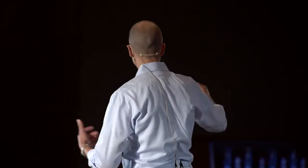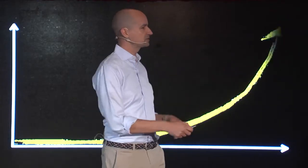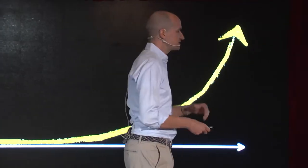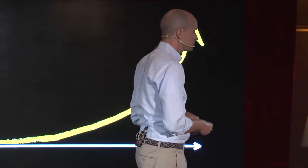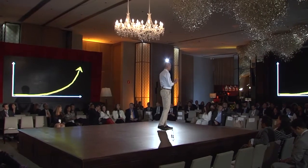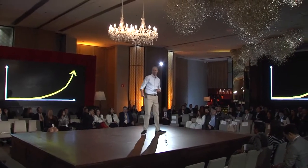At Singularity University we talk a lot about the future being exponential. An exponential trend is a doubling every time period — you go from 1 to 2, 4, 8, 16, 32. If you plot this out, it looks like a classic hockey stick curve. When you go to Silicon Valley and see someone present a business plan, their revenue always looks like this. The first and probably most important exponential trend in technology is something called Moore's Law.